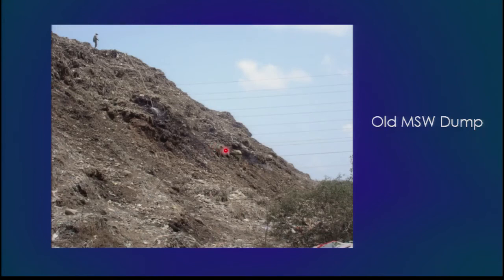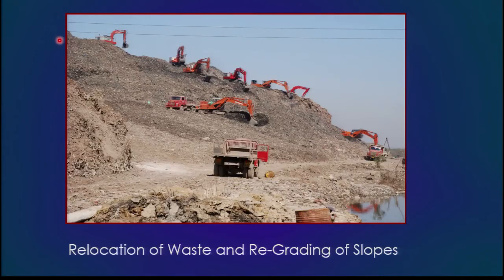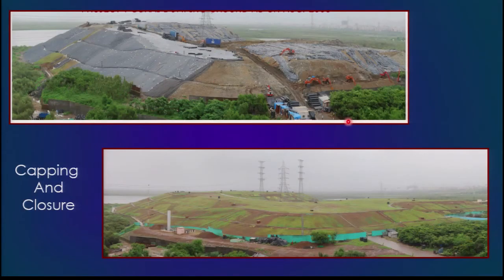This is another big garbage dump at a mega city in India. This dump was remediated by regrading the slopes, making them stable, and providing a final cover system so that rainwater would not go into the dump to create leachate. This is what it looks like today. We are also extracting gas from this waste dump to generate power.